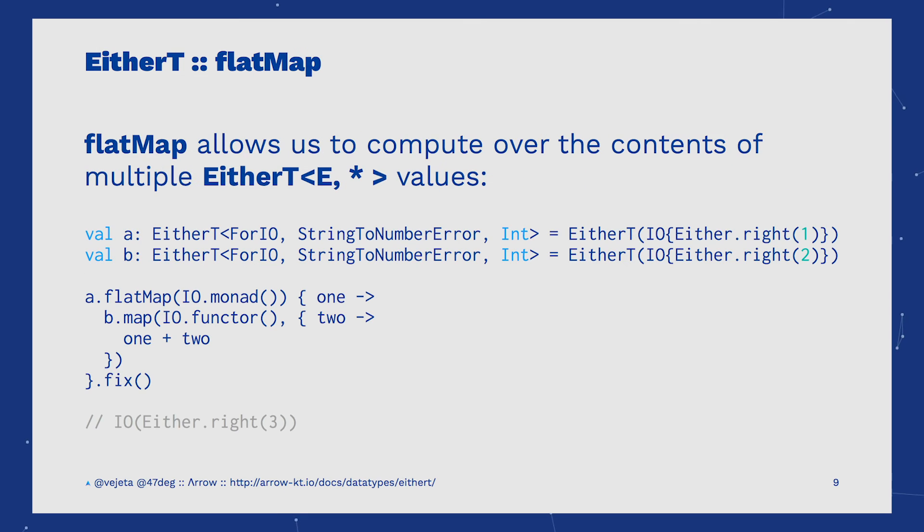Let's go with flatMap. Imagine that we define two EtherT instances. With EtherT and flatMap, we can compose them. The result of operating over the first EtherT, if it is a right, will be to take the integer and sum it with the second. In the examples, the respective right values are 1 and 2. In the flatMap operation, we sum them.